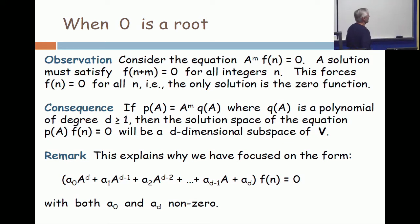And so the consequence of this is if you have a polynomial, p of A, and it has a root, if zero is the root of multiplicity m, then you can take off A to the m times the rest. And now q of A is a polynomial degree d greater than one, but doesn't have zero as a root.